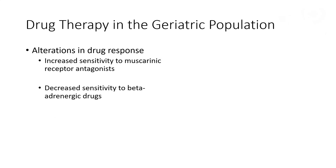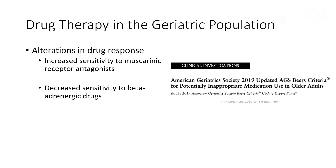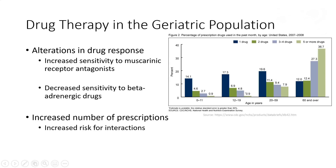Not only do pharmacokinetic changes occur in the elderly, but pharmacodynamic changes occur as well. Elderly patients have an increased sensitivity to muscarinic receptor antagonists or anticholinergic drugs, and also decreased sensitivity to beta-adrenergic drugs such as beta-1 agonists or beta-antagonists. Many of you are familiar with the Beers criteria — a periodically updated publication that lists potentially inappropriate medications in this patient population. Within the elderly population, patients are simply on more medications, so there's an increased risk for drug-drug, drug-food, and drug-disease interactions. Patients who are 60 years or over in age have over a third of them on five or more medications.